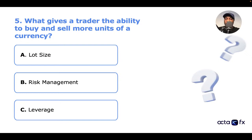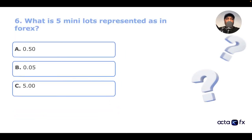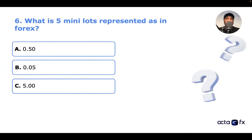Keep the answers coming. We're moving to question six: what is five mini lots represented as in Forex? A: 0.50. B: 0.05. C: 5.00. Let me know in the comments if you know the answer.